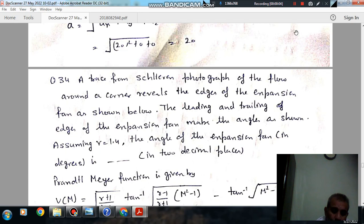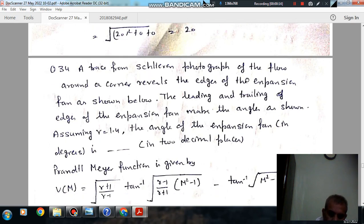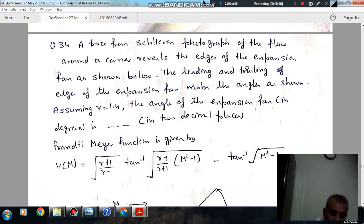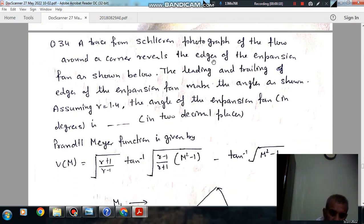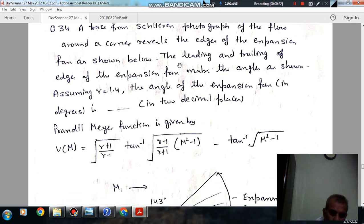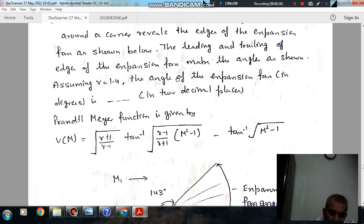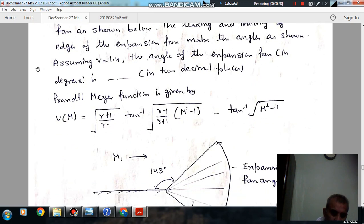Hello, welcome again. We are solving GATE 2017 Aerospace Engineering paper, question number 34. A trace from Schlieren photograph of the flow around a corner reveals the edges of the expansion fan as shown below.